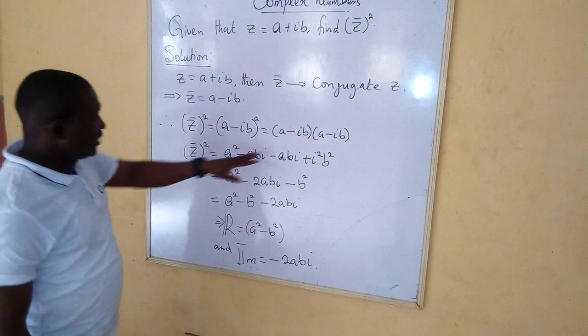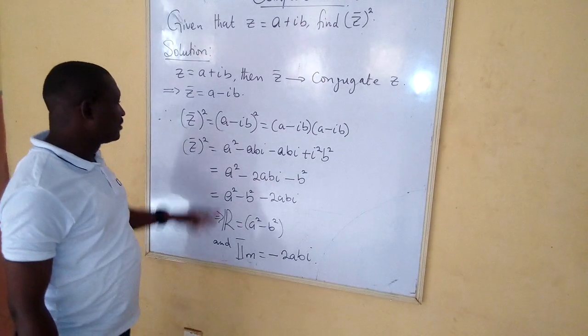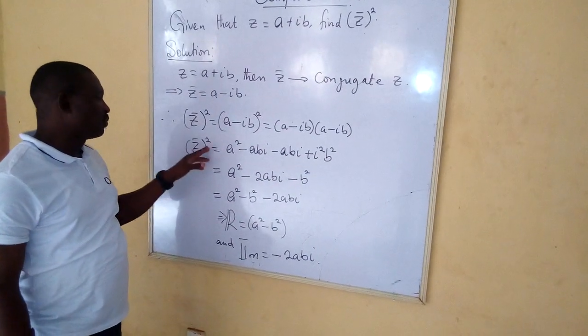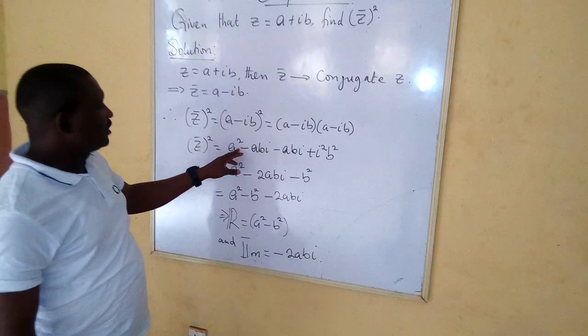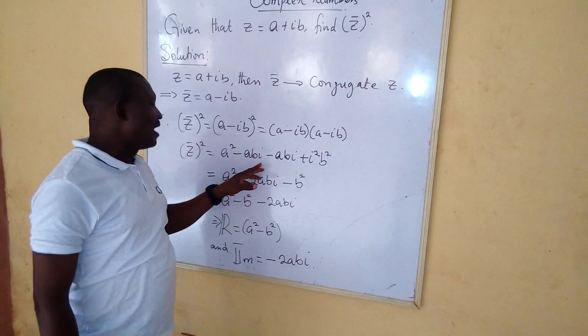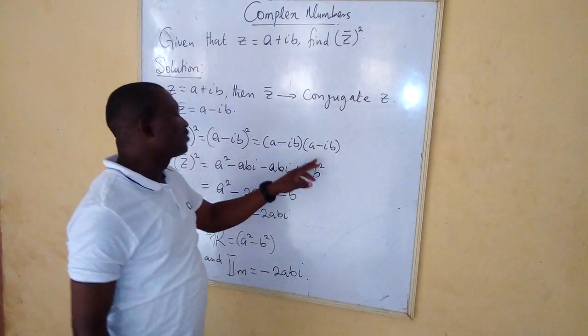When I further simplify by multiplying out, I will have my z-bar raised to power 2 to be equal to a squared minus abi minus abi plus i squared b squared.